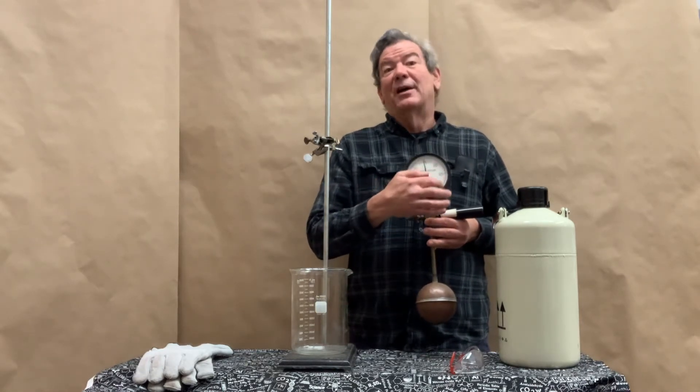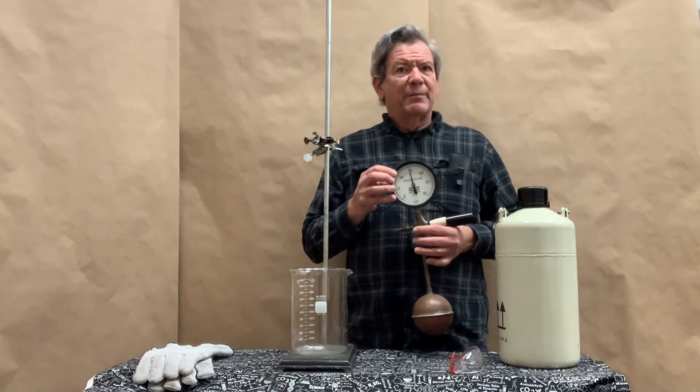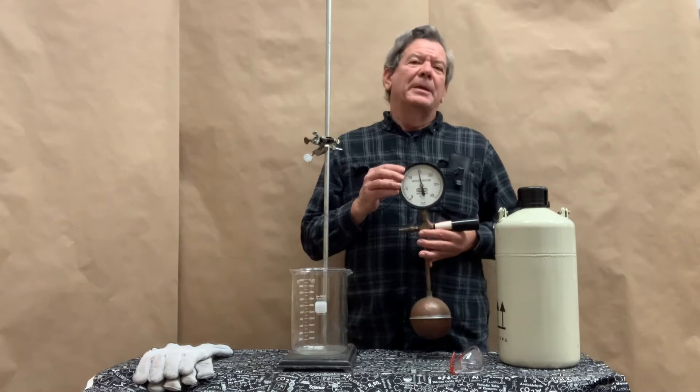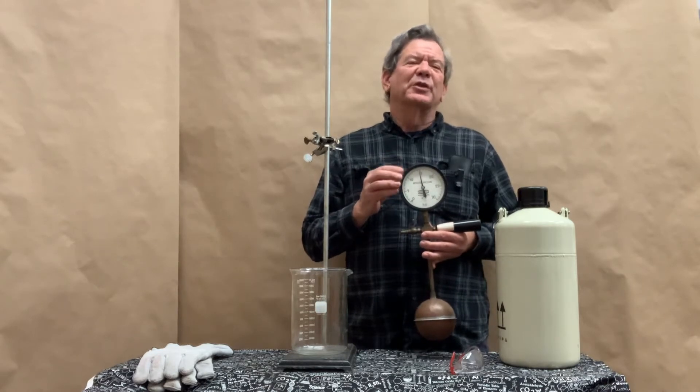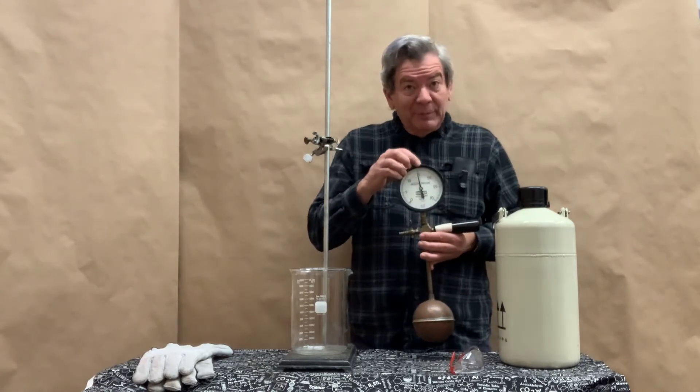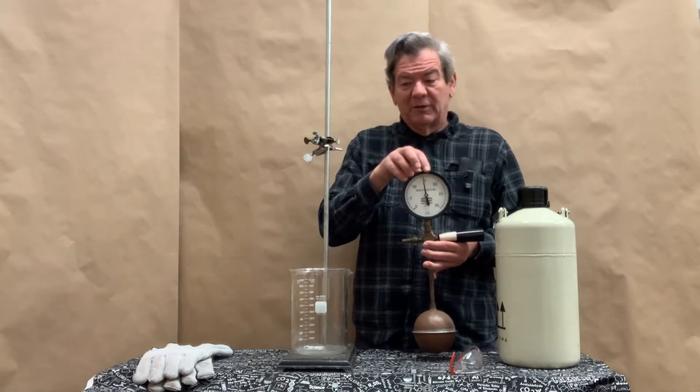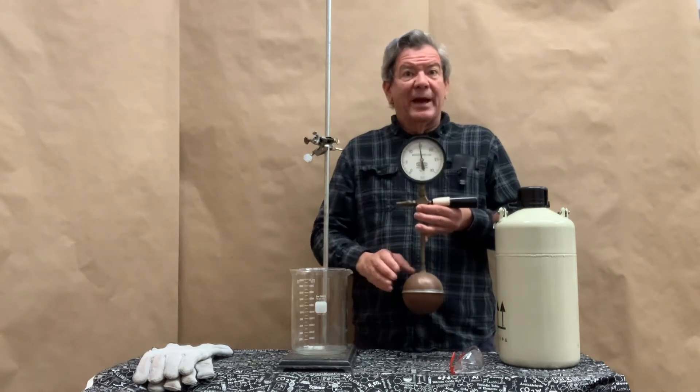And up here I have a gauge that measures the pressure. Now this is measuring the absolute pressure which means it's not at zero right now. This dial is in pounds per square inch, not a metric unit. But atmospheric pressure is about 14.7 pounds per square inch or a little bit less than 15. 15 is right at the top of the dial. That's where you're seeing it right now. So it's registering atmospheric pressure.